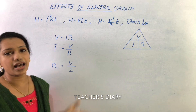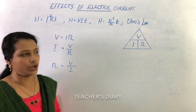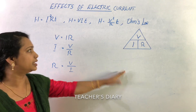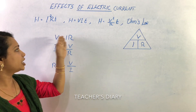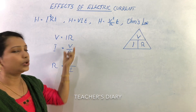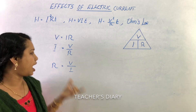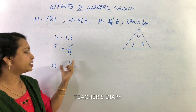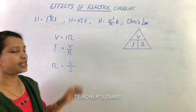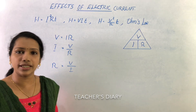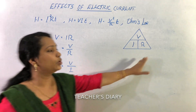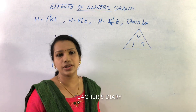Using the V by R equation, this is Ohm's Law. V is equal to IR. I is equal to V by R. R is equal to V by I. If you have these three equations, you can rearrange them.